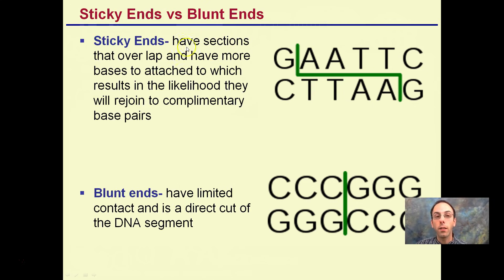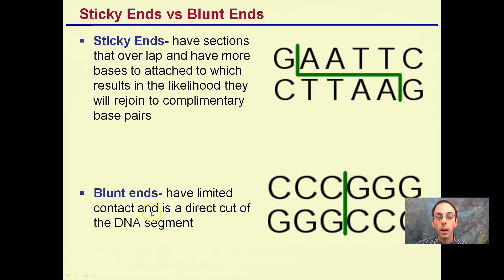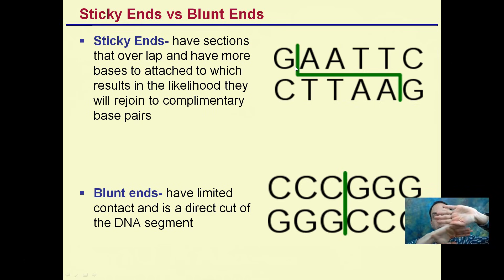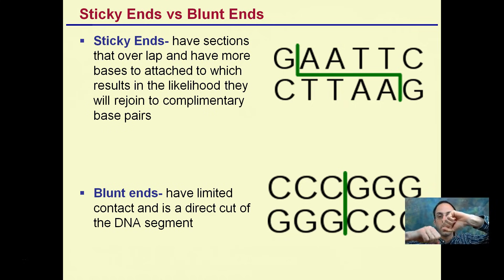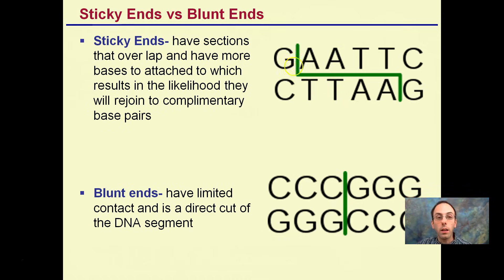Sticky ends versus blunt ends: sticky ends have sections that overlap and have bases attached, which results in a higher likelihood they will rejoin with complementary base pairs. Think about it here — this little green line, if we separate it, we get sticky ends, and this end wants to stick back to the other end. Contrary to that, blunt ends have limited contact from direct cuts. Sticky ends have a larger area available for binding, and that's what causes the sticky part.